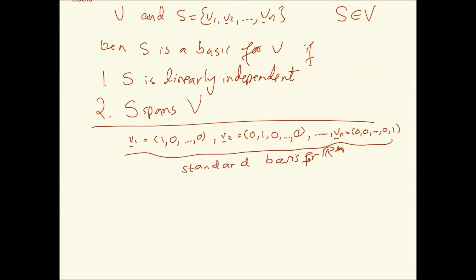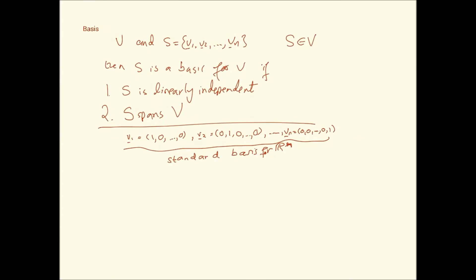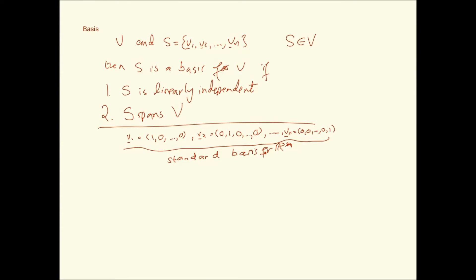On a smaller scale, a quick example: (1,0,0), (0,1,0), and (0,0,1) form a basis for R3 — it's the standard basis for R3. To prove linear independence, I set up the equation and show that the only solution is the trivial solution.